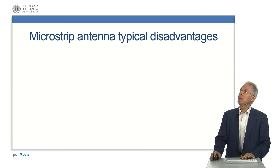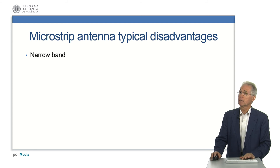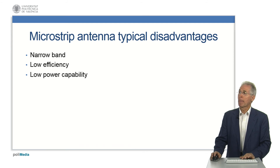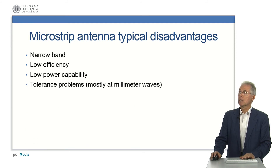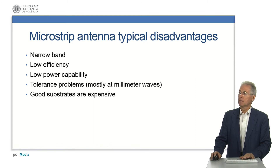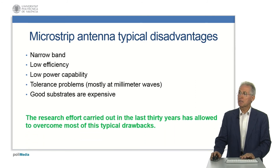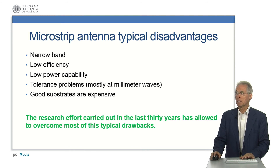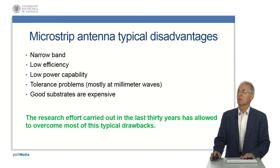There are also some typical microstrip antenna disadvantages, such as narrow bandwidth, low efficiency, lower power capability, tolerance problems mostly at millimeter waves, and expensive good substrates. The tremendous research effort carried out in the last 30 to 40 years has allowed researchers to overcome most of these typical drawbacks.